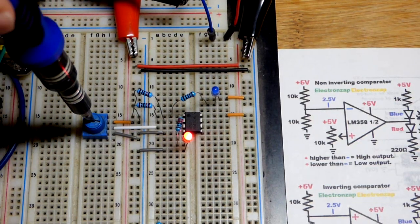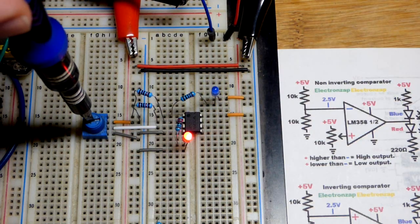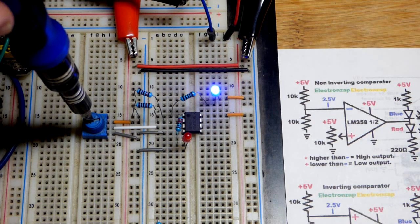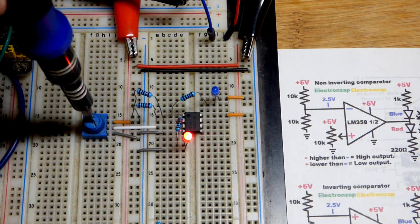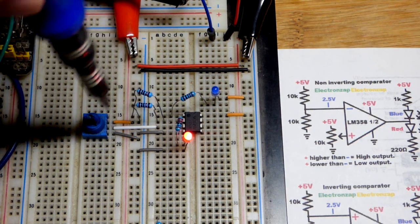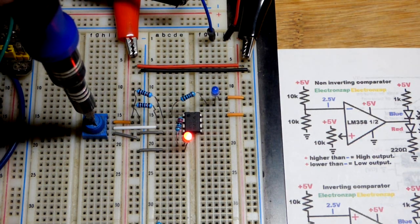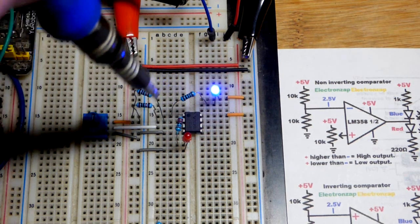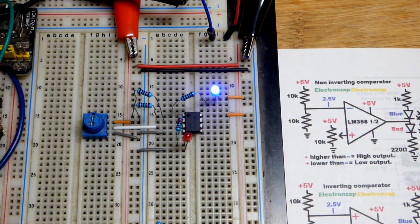And we don't have hysteresis with this. There's pretty much an exact spot. And if you get right to the middle, it might do some goofy stuff. But when you're definitely higher than the reference voltage, then the output's high. When you're definitely lower than the reference voltage, the output is low.